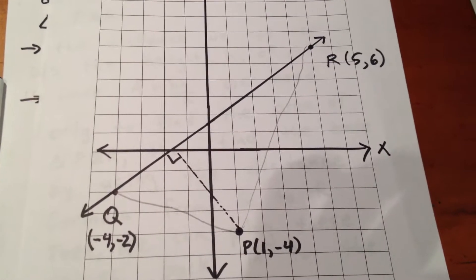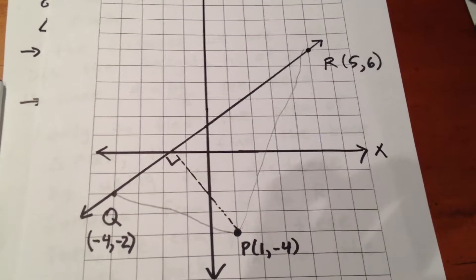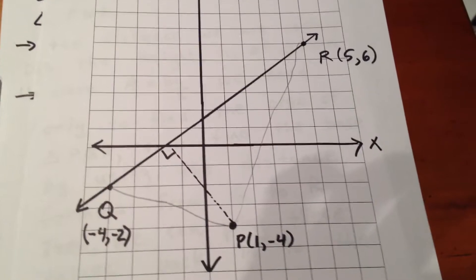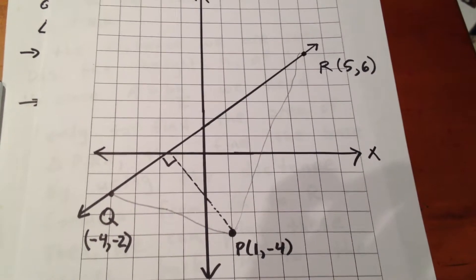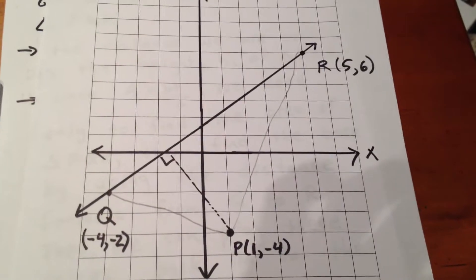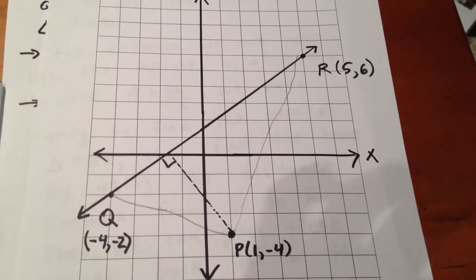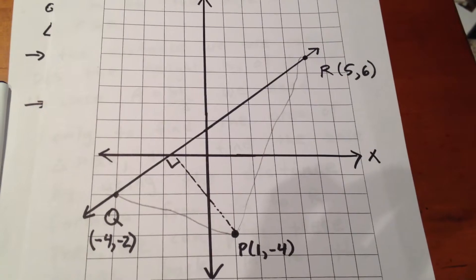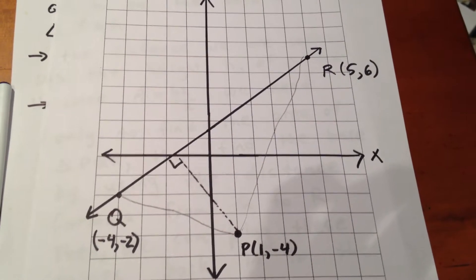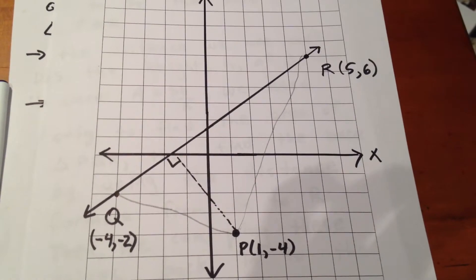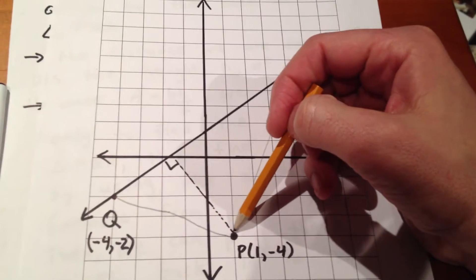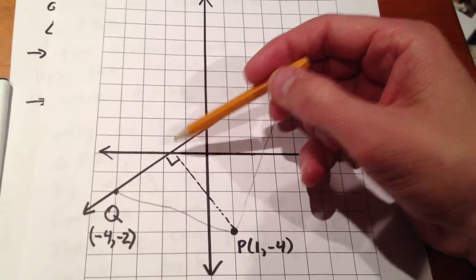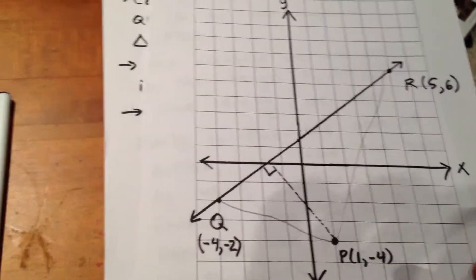Since we have a quick way to find the area, which is the down product minus up product method, and since we have a quick way to find the length of the base, which is the distance formula, we can sub those two values into the area formula, and we'll end up getting the height. And the height of the triangle is exactly what we're looking for. The height of the triangle is the distance from the point to the line in question. It's pretty ingenious.